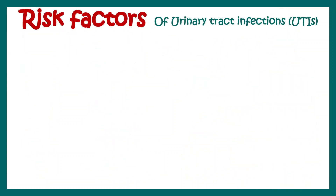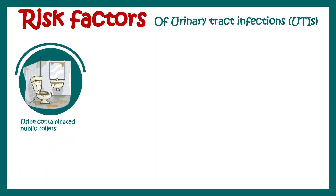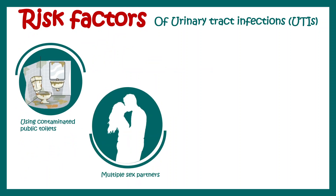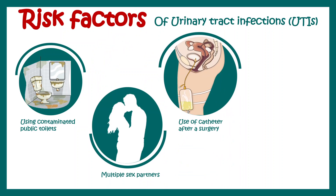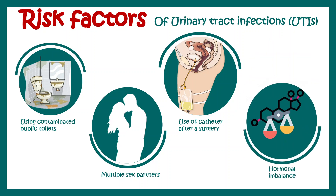Risk factors for urinary tract infection include using contaminated public toilets, having multiple sex partners, and catheter usage after surgery. Contaminated catheters in particular provide a high chance of bacteria invading the urogenital system. Hormonal imbalance, especially during pregnancy, can also increase the risk of developing a urinary tract infection.